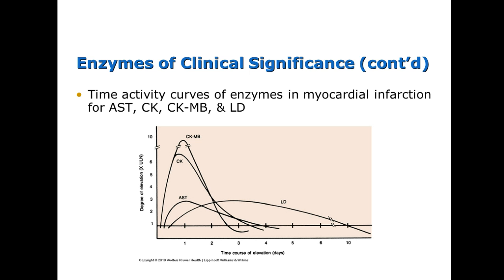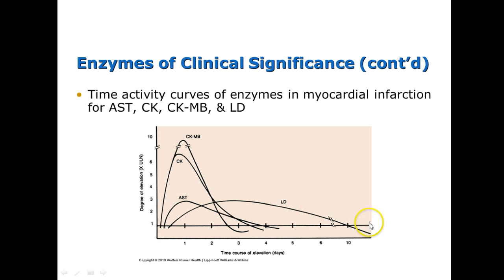This chart shows liver and heart enzymes and where they come into play with a myocardial infarct, with time on the bottom axis. Creatine kinase rises very quickly — within about four hours — and also falls very quickly, within four days. Other enzymes such as AST and LDH will also rise quickly but fall relatively slowly; however, they are not very specific.